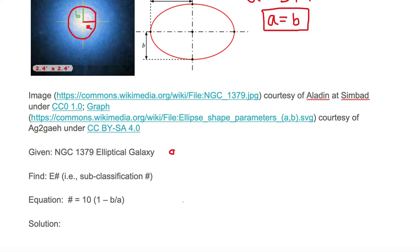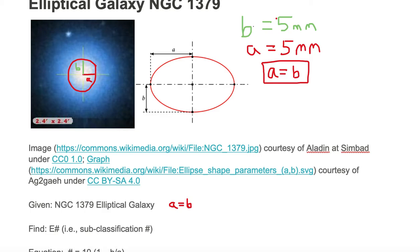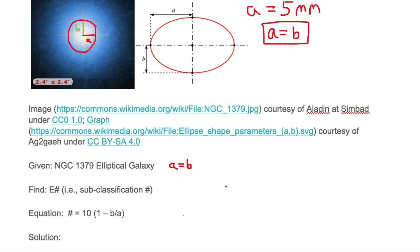Now I can add that to my given. We're given NGC 1379. I went ahead and measured its A and its B so I know its values. And I can put A equal to B in here. Now I can also leave it as A is equal to five millimeters and B is equal to five millimeters and substitute into our equation here, and I'll do that as well. We want to find this E subclassification number where the number is based on this equation equals 10 times 1 minus B over A.